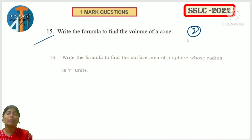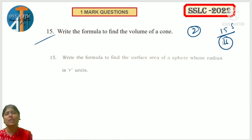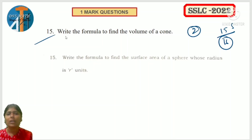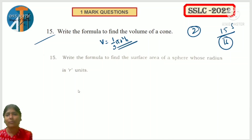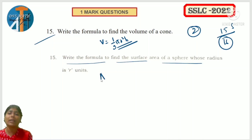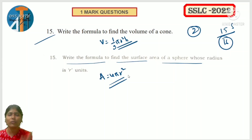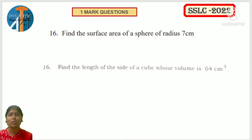Questions 15 and 16 are about surface area and volume. Two questions will come, 1 mark each. For example: write the formula to find volume of cone - volume of cone is (1/3)πr²h. Write the formula to find surface area of sphere - 4πr². Just the formula is asked in one question, and a formula-based problem in the next. Clear - see 16th question.